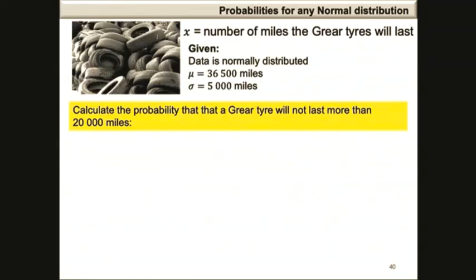Let's look at an example where x is the number of miles that Greer tires will last. The data is normally distributed with a population mean of 36,500 miles and a population standard deviation of 5,000 miles.